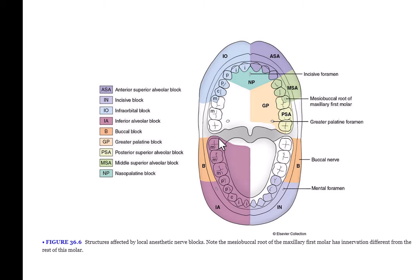The MSA — middle superior alveolar block — numbs the premolar region. Middle refers to the premolar area, the middle of the quadrant; superior means maxillary. The MSA numbs the premolars and the mesiobuccal cusp of the first molar. The PSA — posterior superior alveolar block — numbs the posterior teeth but does not numb the mesiobuccal root of the first molar; you need the MSA for that.